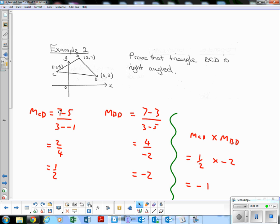So MCD using Y2 minus Y1 over X2 minus X1 comes to a half. Always cancel down a fraction if you can. MBD, again, Y2 minus Y1 over X2 minus X1, comes out to be negative 2.